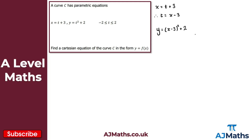Now we evaluate the right-hand side. Expanding the double brackets gives x squared, then minus 3x and another minus 3x giving minus 6x, and minus 3 times minus 3 gives positive 9, plus the plus 2. Simplifying, we get y equals x squared minus 6x plus 11.